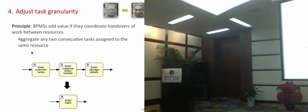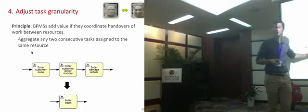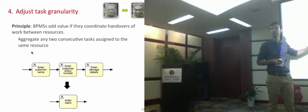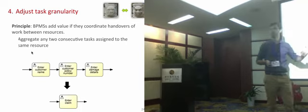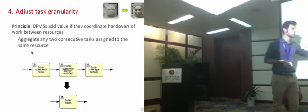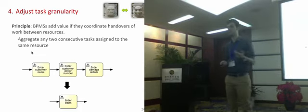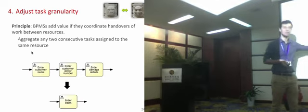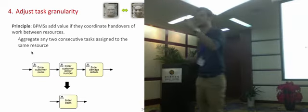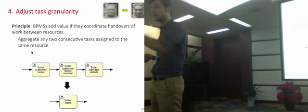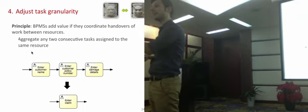When does it not make sense to aggregate? When information is going to be produced in between tasks — if certain data is needed to complete a later form, you cannot aggregate because you don't have the necessary information yet. Also when you want to track progress and know exactly when each step has been completed, or when you want to capture exceptions specific to some tasks — for example, setting an exception handler for a task that expects certain information that hasn't arrived.